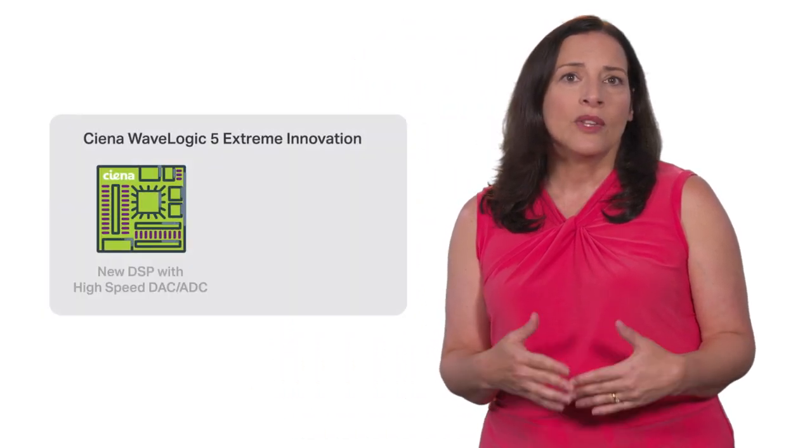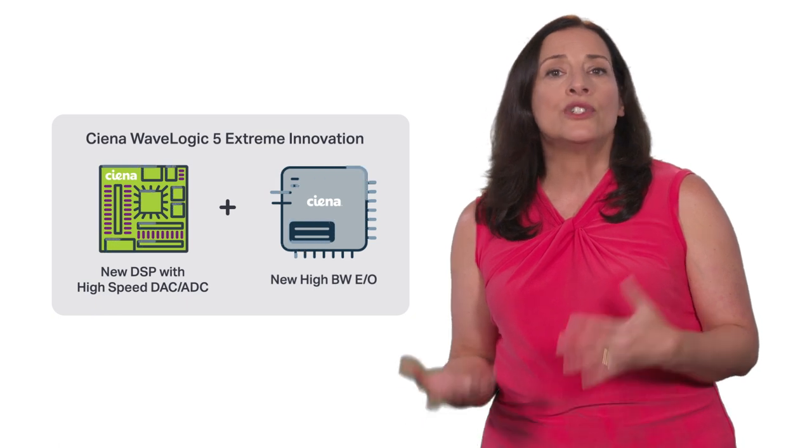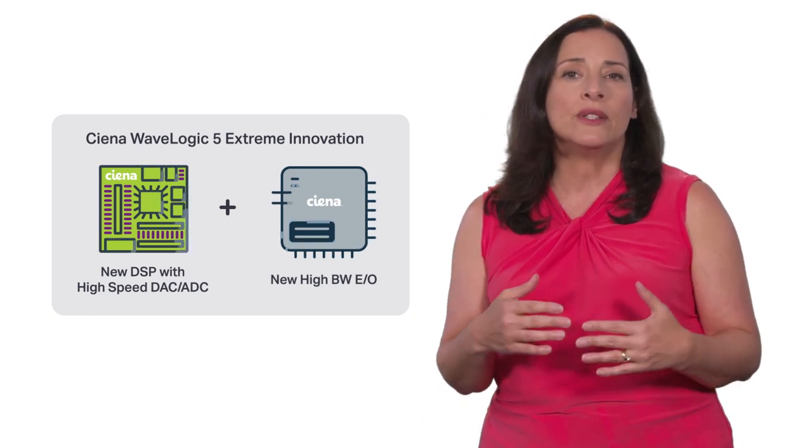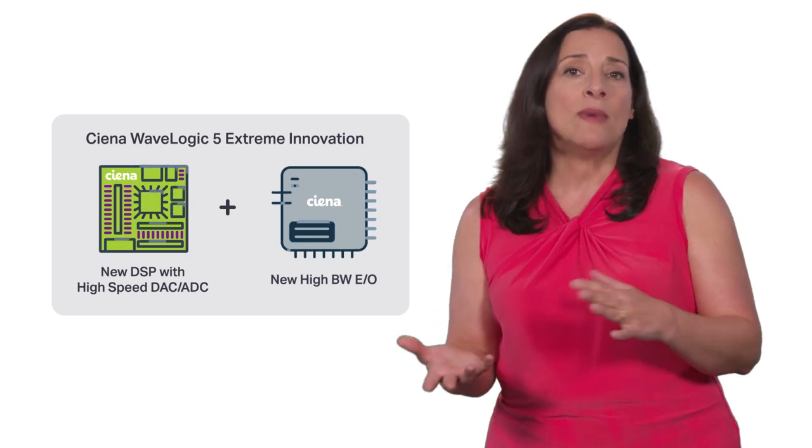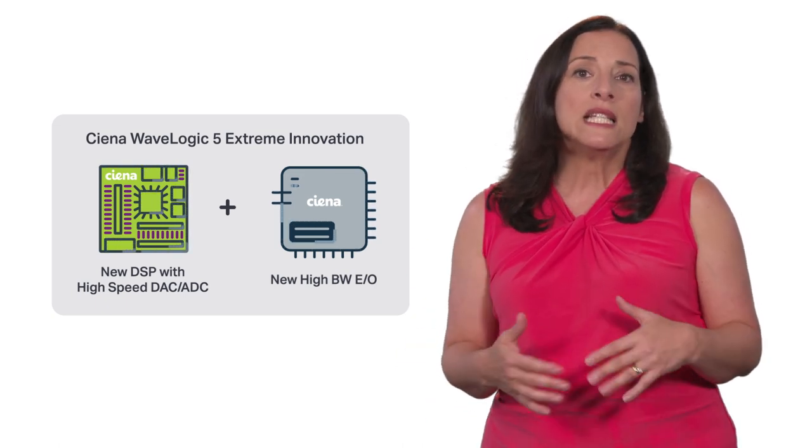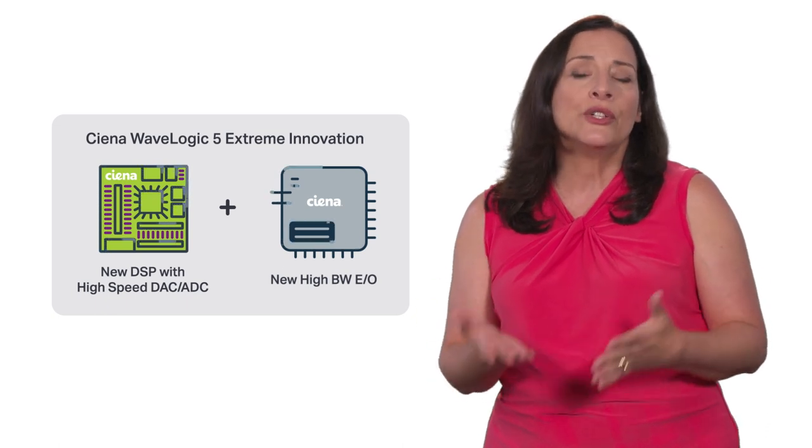So why isn't everyone doing 95 Gigabaud? Because the DSP, as well as high bandwidth electro-optics and high speed converters that are required for 95 Gigabaud operation, are not generally available. Being vertically integrated, having the expertise and ownership of the full design, including the DSP, high speed mixed signal design, and high bandwidth electro-optics, is needed to deliver the networking benefits associated with this technology at an earlier time to market.